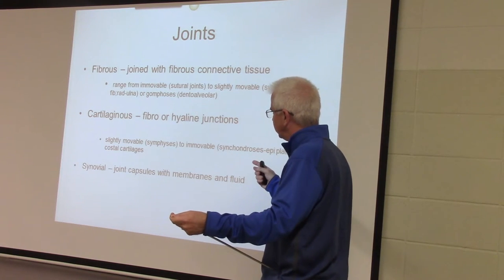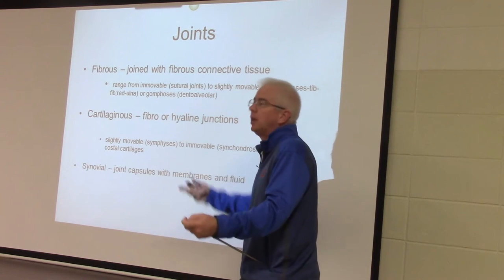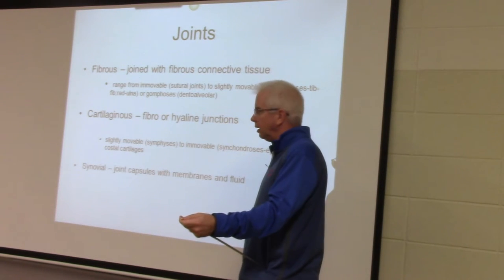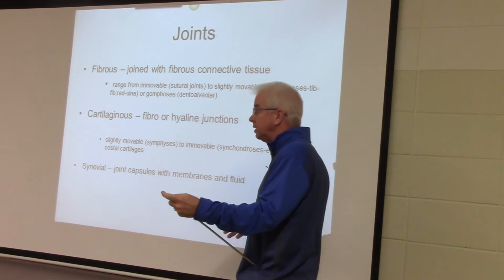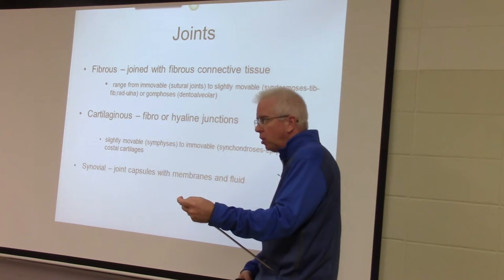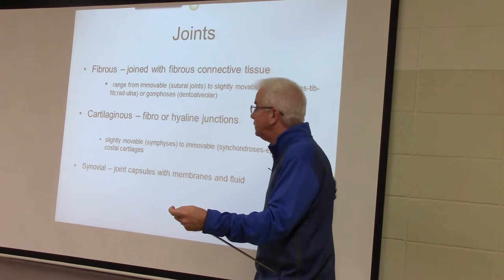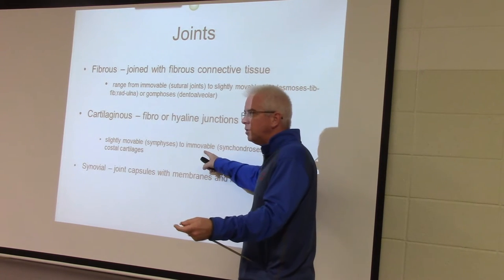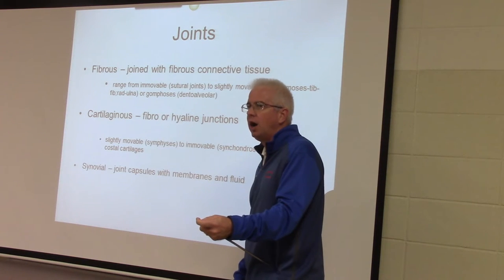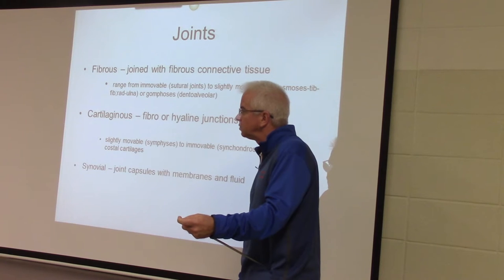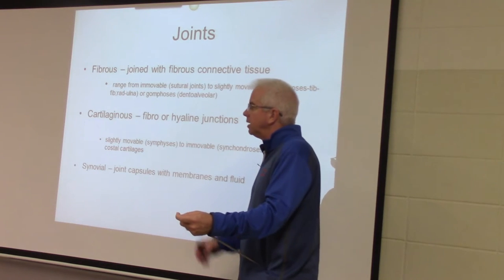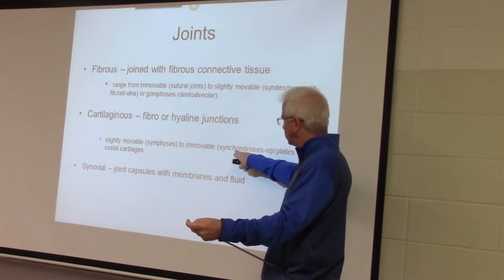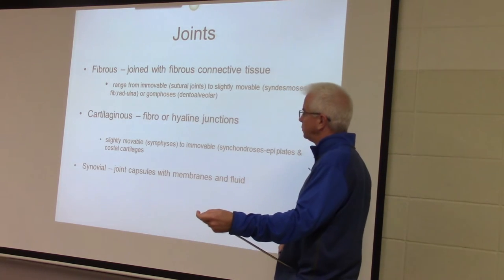Cartilaginous joints can be fibrocartilage — like the menisci in the knee, the pubic symphysis, and the intervertebral discs — we call those symphysis joints. Others are immovable, like the costal cartilage attaching ribs to the sternum — you don't cut those in heart surgery because cartilage won't heal. That cartilage is hyaline, and those joints are called synchondrosis joints. The ones we've really been emphasizing, though, are the synovial joints.